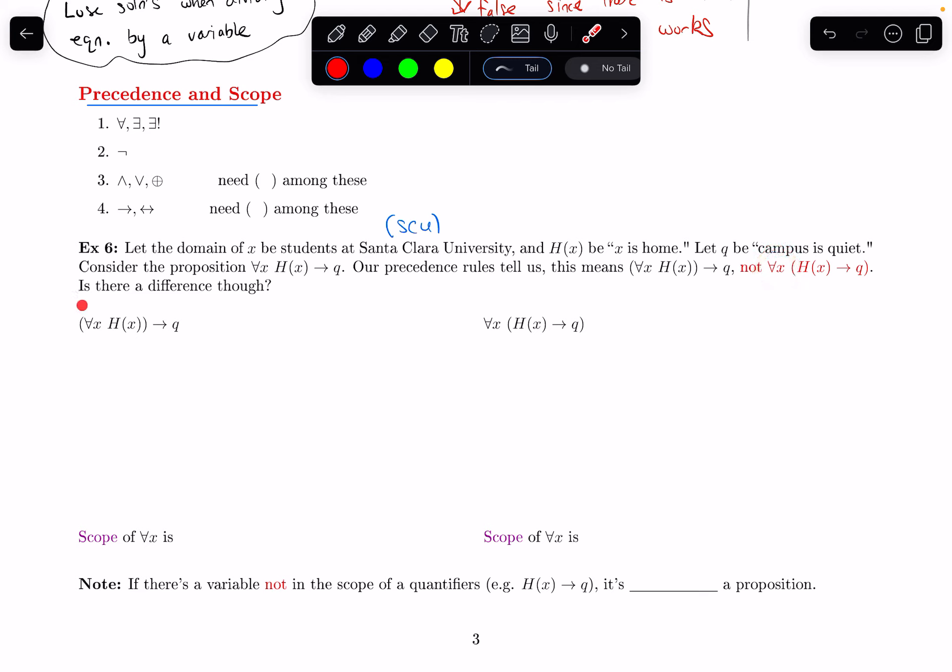But is there really a difference in what these mean? So let's look at each of them. When I have the for all X, H(x) first, and then I do the implication after, the implication means I have some if-then statement. The if part is saying for all X, H(x). So that is saying for all students at SCU, X is home.